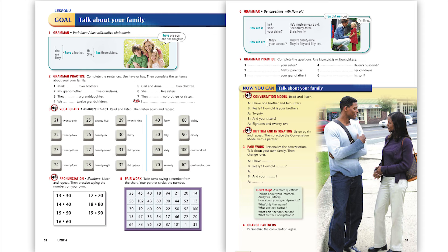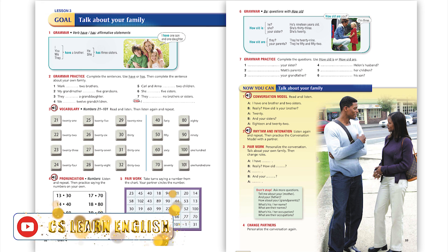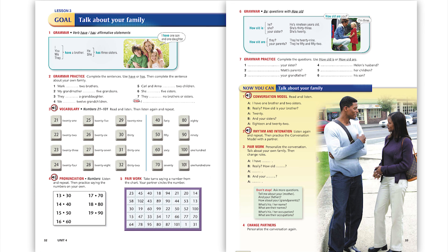I have one brother and two sisters. Really? How old is your brother? Twenty. And your sisters? Eighteen and twenty-two.